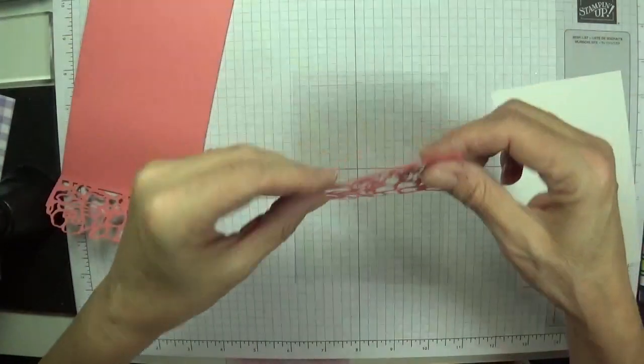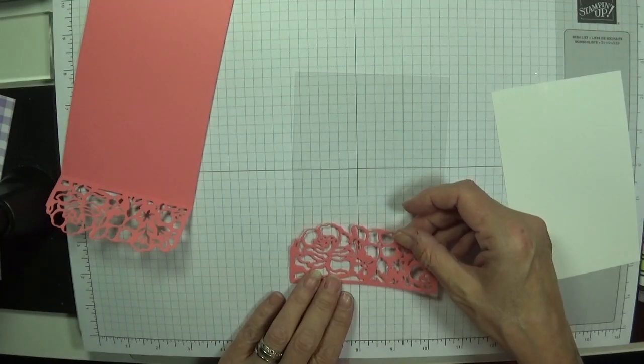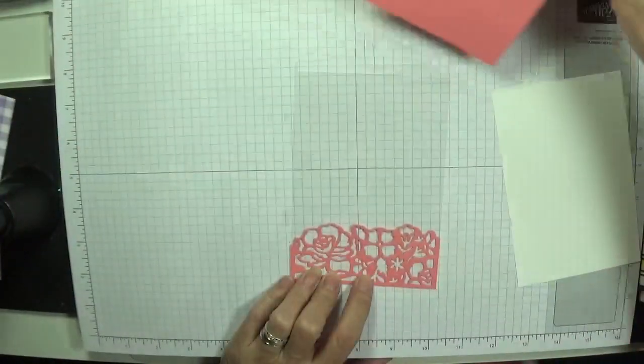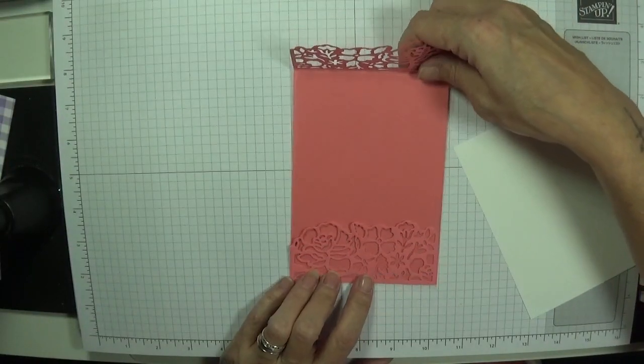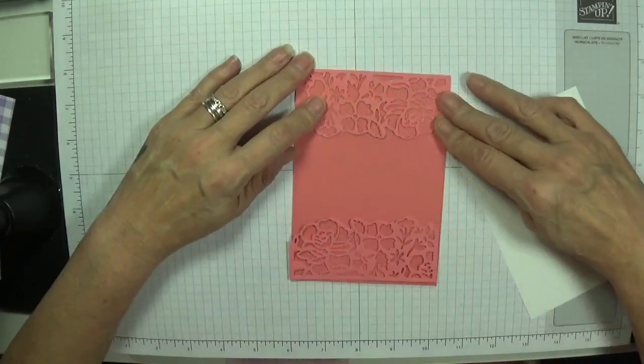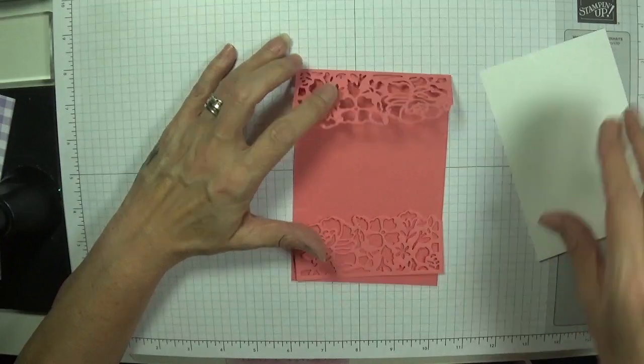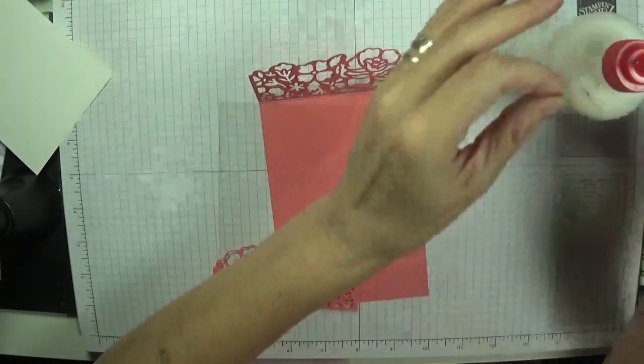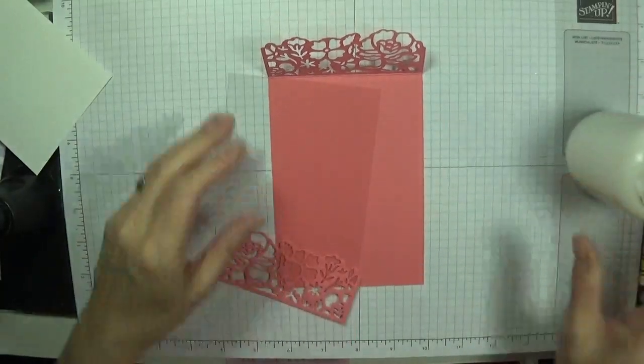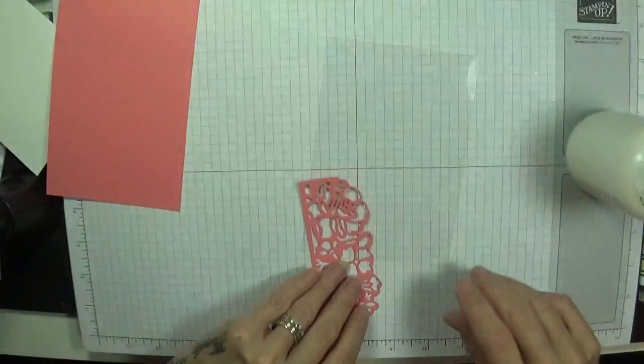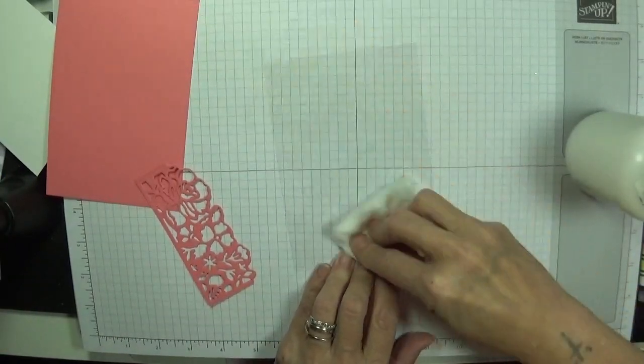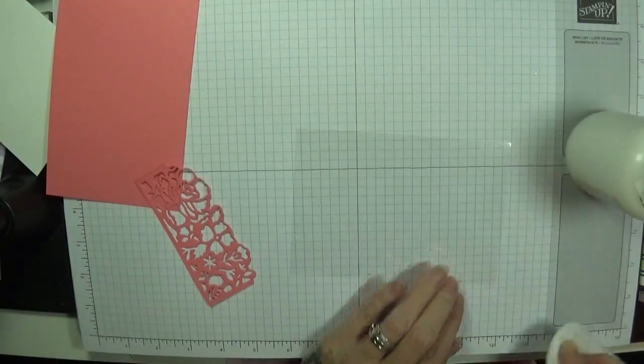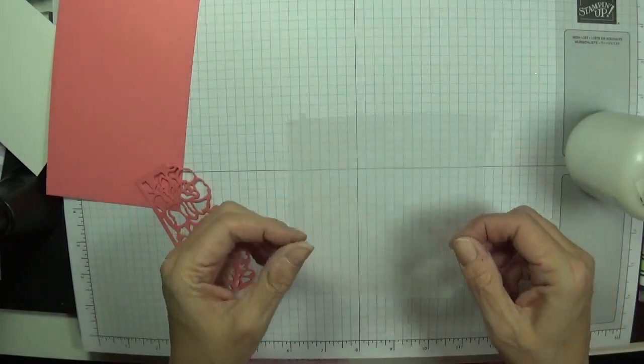You could use the double-sided adhesive here if you wanted to but I think there's plenty of space for you to glue this into place. There's our other piece to the card. This is the bottom piece, it's the same width as my card base so I'm going to attach that on there. This is just window sheet that's been cut to size.